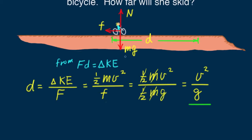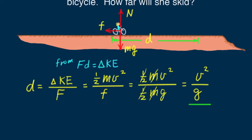Suppose she and the bike had twice the weight — then she'd experience twice the friction. Twice divided by twice cancels out. Hence mass cancels in this problem. How frustrating if you think the problem cannot be solved because the mass of Nellie and her bicycle isn't given — but mass cancels, so it doesn't matter.